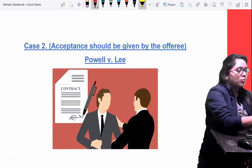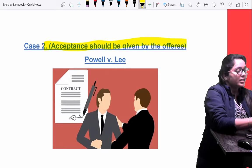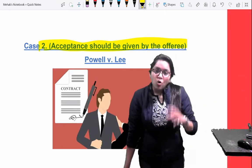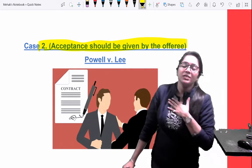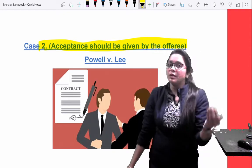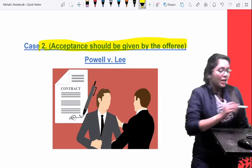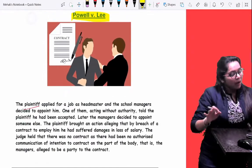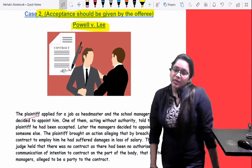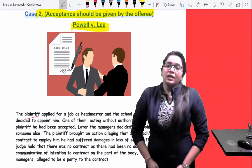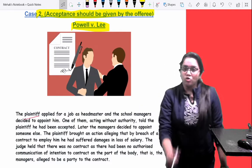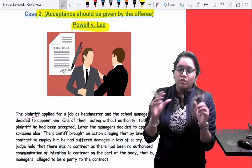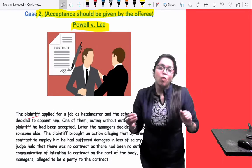Second case is also very important. It says acceptance must be given by the offeree. The offeree is the only one who can give acceptance, no other third party. This is the case Powell v. Lee. In this case, what happened? Powell applied to a company for a headmaster's job. His interview went very good. The jury and interview takers liked him.